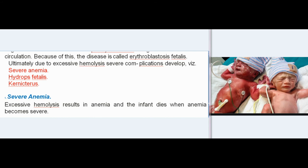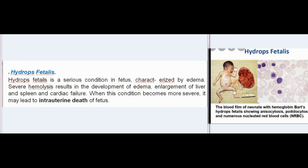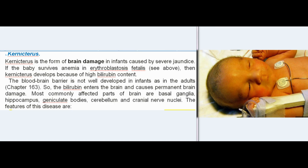Complications of Erythroblastosis Fetalis: Severe hemolysis leads to severe anemia — the infant dies when anemia becomes severe. Hydrops fetalis is a serious condition characterized by edema; severe hemolysis results in edema, enlargement of liver and spleen, and cardiac failure, potentially leading to intrauterine death of the fetus. Kernicterus is brain damage in infants caused by severe jaundice. If the baby survives anemia, kernicterus develops due to high bilirubin content. Because the blood-brain barrier is not well developed in infants, bilirubin enters the brain and causes permanent brain damage.